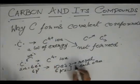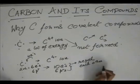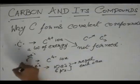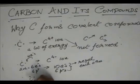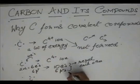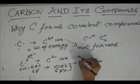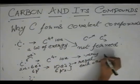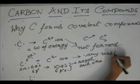But the repulsion between the electrons is more because they are all in different orbits. Two are in one orbit, six are in another orbit, and eight are in another orbit. So what happens is that this C4- becomes very unstable.